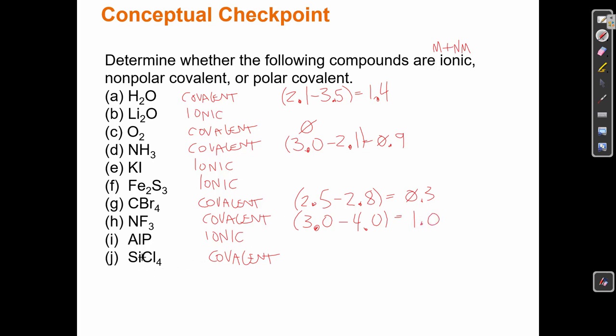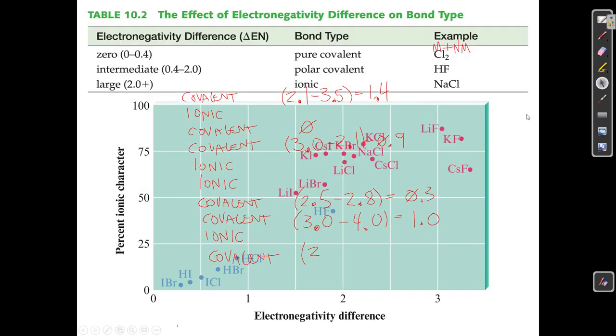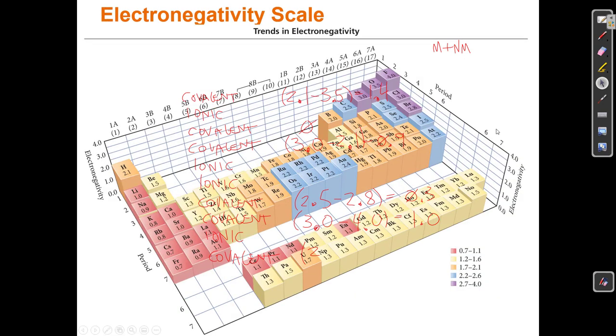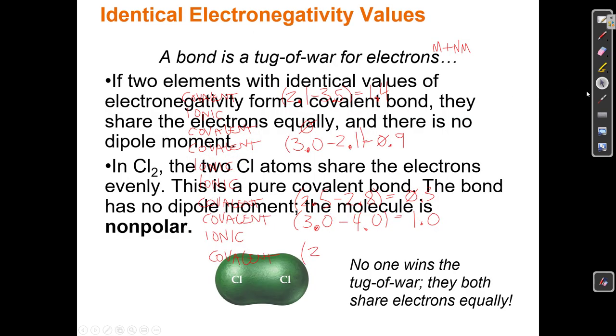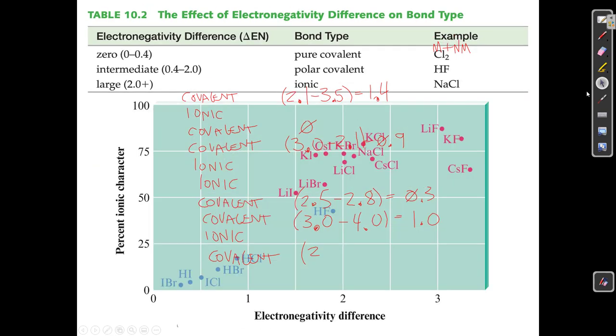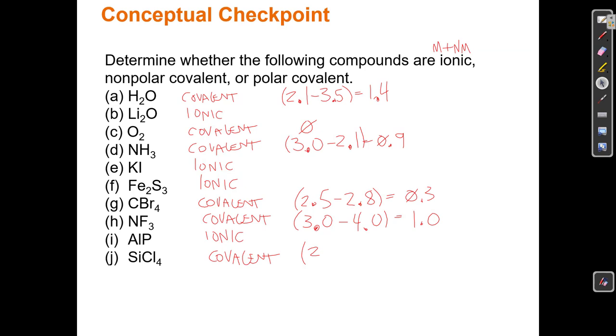And finally silicon chloride. Silicon is, I actually can't remember what silicon is. Silicon is 1.8 and chlorine is 3.0. 3.0 minus 1.8 equals 1.2. So remember according to our chart, if this difference is 0.5 or more we call it polar. So H2O, polar.